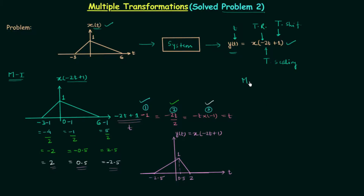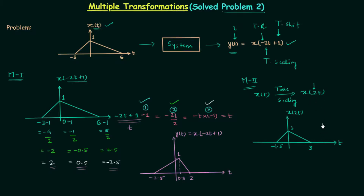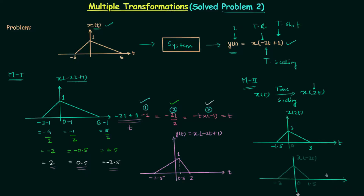In method 2, we perform scaling first. Starting from the original signal X(t), we perform time scaling to obtain X(2t). Since the multiplied number is 2, which is greater than 1, there is compression: we get minus 1.5 and 3 by dividing minus 3 and 6 by 2. Next, we perform time reversal — taking the mirror image about the y-axis — to obtain X(-2t). Time reversal is straightforward, so let's do it quickly.